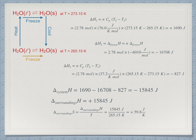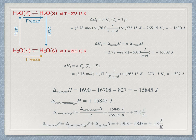The sum of this value, which we found just earlier for the system, is the entropy change of the universe. 59.8 minus 58.0 equals plus 1.8 joules per kelvin. This is the entropy change of the universe. It is positive.